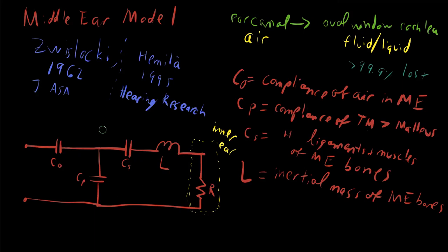This is the impedance matching circuit of the middle ear, at least as described in the Hemila 1995. It's extremely useful because it helps us understand how power coming in through the system can be matched so that more of it actually goes through the inner ear and actually get transmitted into the cochlea.